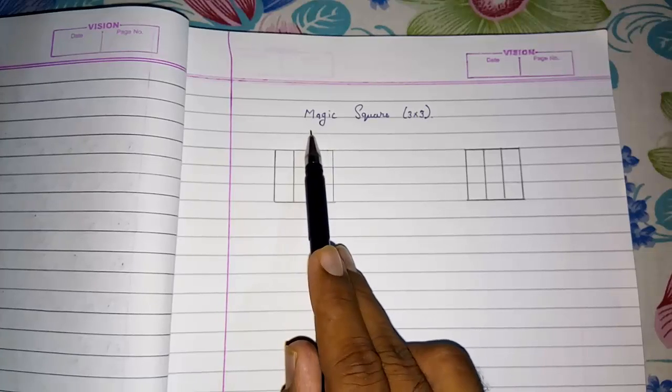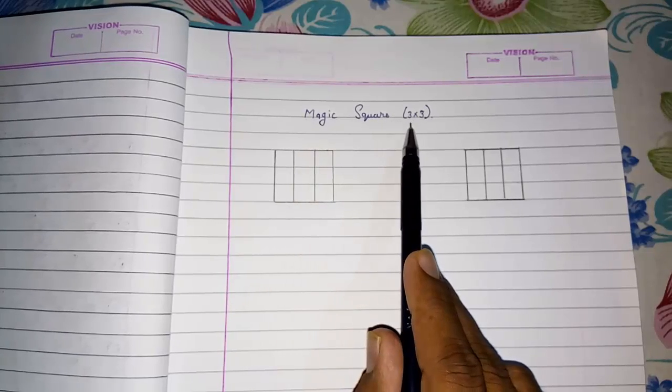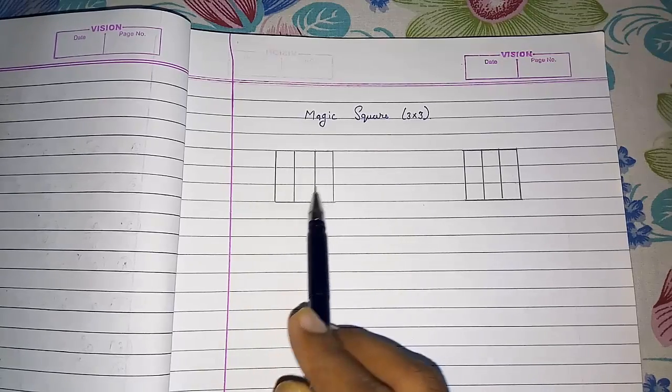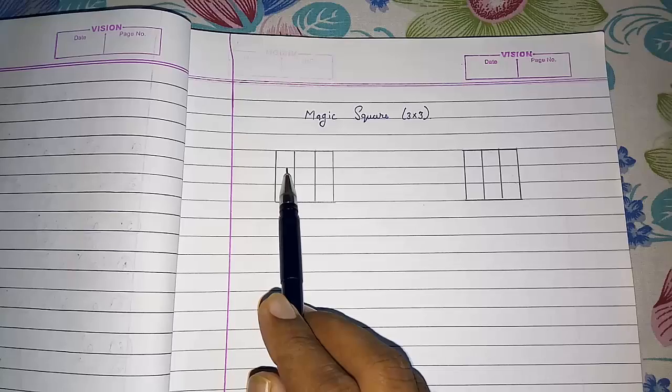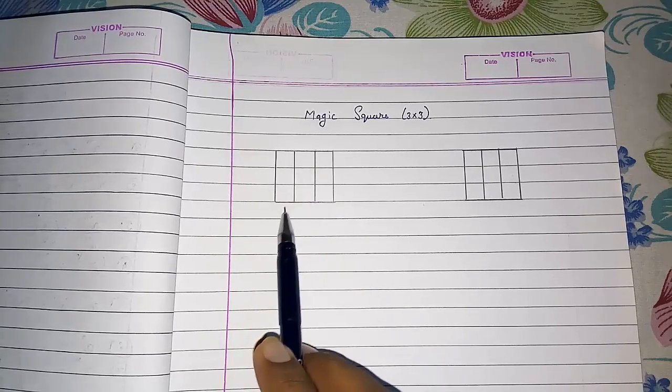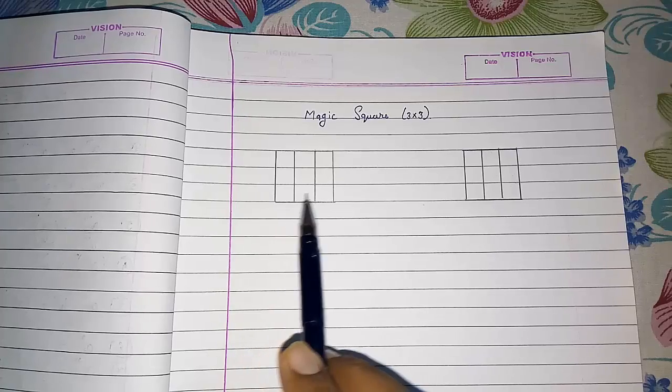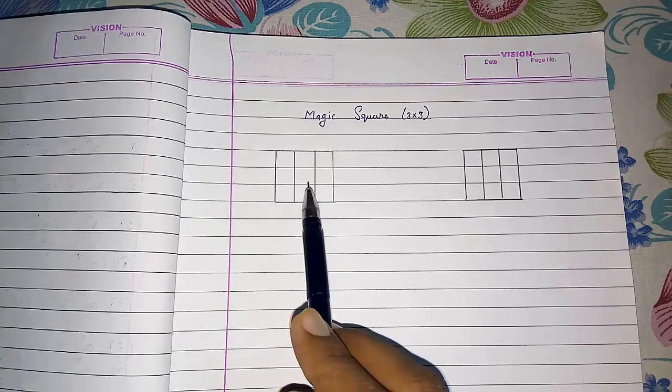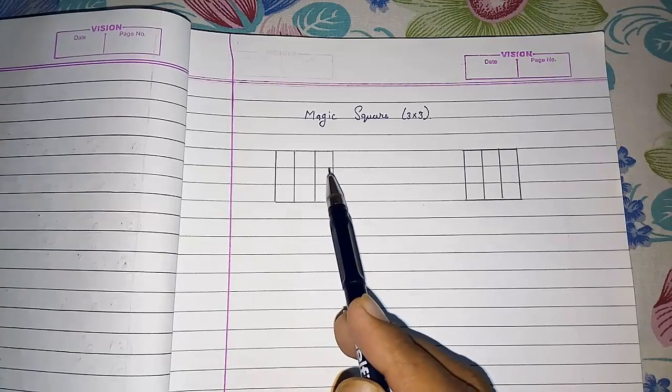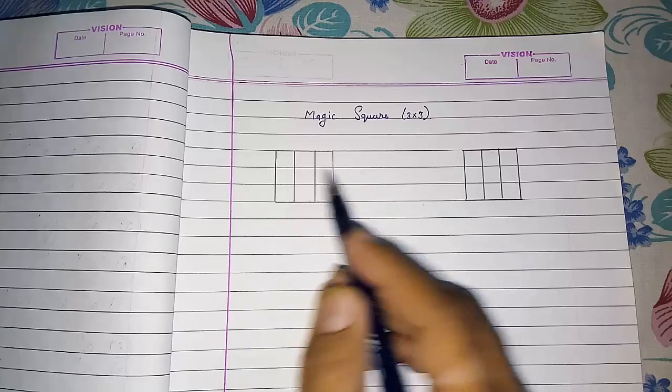First of all, take any consecutive 9 numbers. Then we will represent those 9 numbers on this square in such a way that horizontally, vertically, or diagonally you will get the same sum. And before representing those numbers, we can say what the sum will be also. So we are going to solve that.